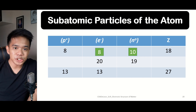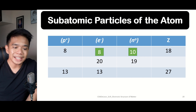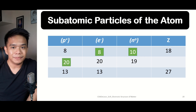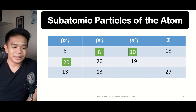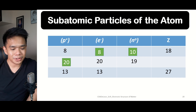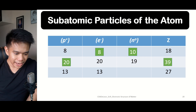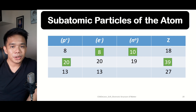In the second row, the number of electrons is 20 and the number of neutrons is 19. Since the number of protons always equals the number of electrons, the number of protons is also 20. To find the atomic mass, add protons and neutrons: 20 plus 19 equals 39.